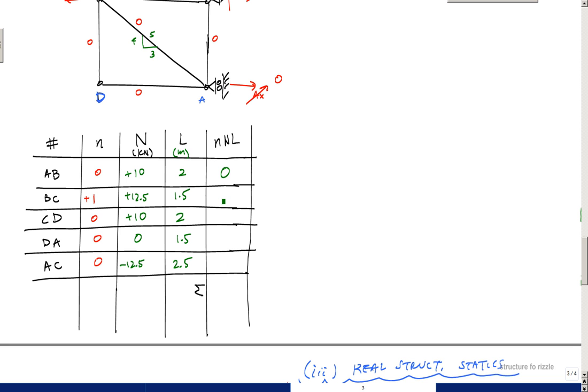This would be 12.5 times 1.5, which is 18.75. This is 0, 0, and 0, and this is in units of kilonewton meter right here. This is 18.75 kilonewton meter right here.